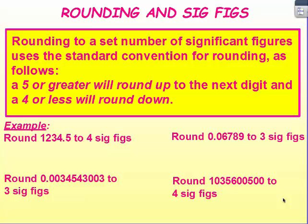Rounding and significant figures. Rounding to a set number of significant figures uses the standard convention for rounding. If it's a 5 or greater, it's going to round up to the next digit. If it's 4 or less, it will round down.